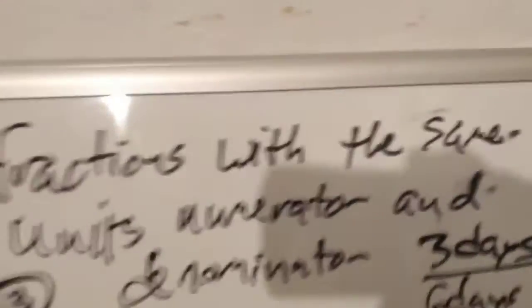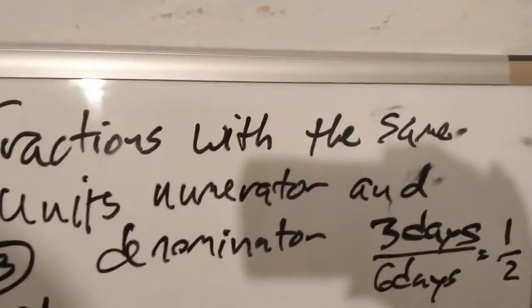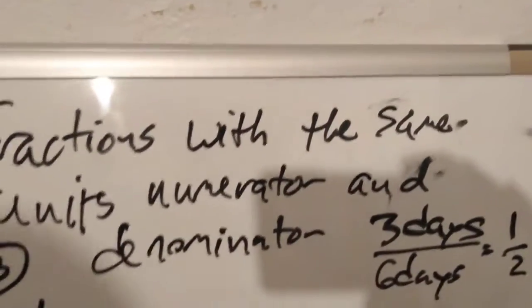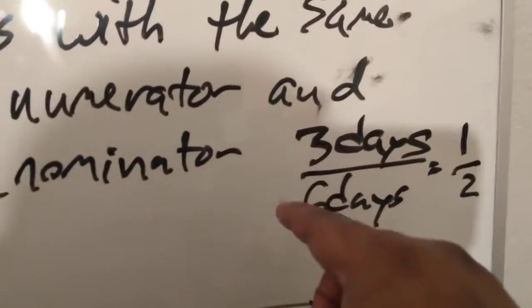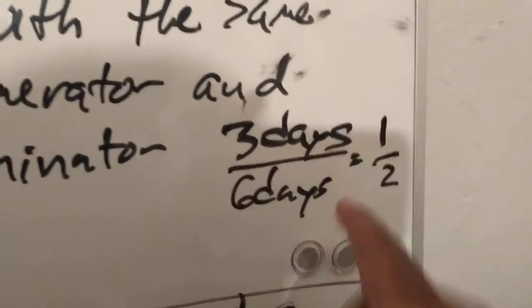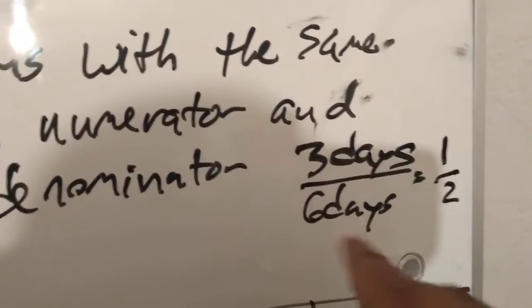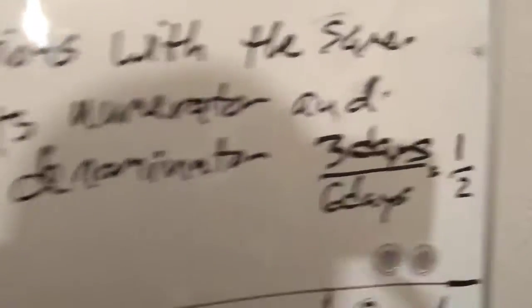Like I said, ratios are fractions with the same units in the numerator and denominator. So, for example, three days to six days. Well, since the days are the same units, these are going to cancel. The days cancel and you'll get three over six, which reduces to one half. This is actually called the ratio because the units are the same.